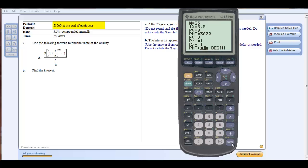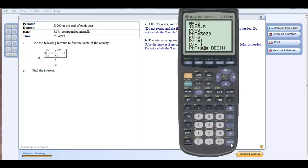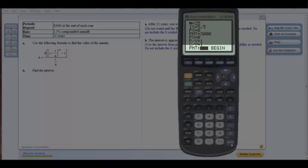My periods per year, well it says I am making a periodic deposit at the end of each year, so we'll leave that as one. And interest is compounded annually, so again that's once per year. It says that I'm making my deposit at the end of each year, so I'll leave end highlighted.